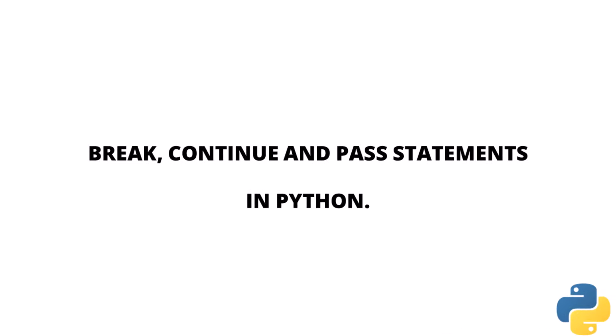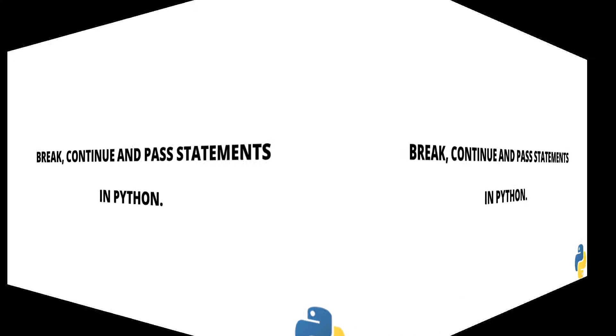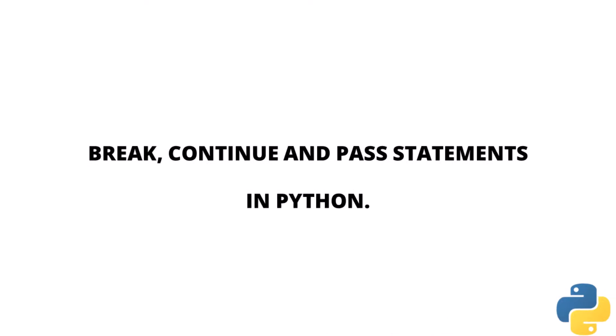In Python, break, continue, and pass statements are used to alter the flow of control in loops. They allow us to exit a loop prematurely, skip certain iterations, or simply do nothing in the loop. These statements are particularly useful for handling special cases or conditions within loops and improving the efficiency of our code. Let's explore some examples in our Jupyter notebook.